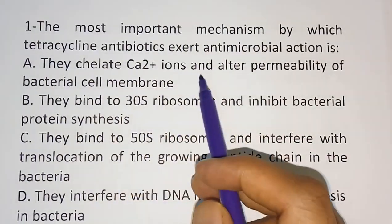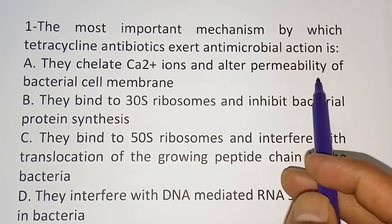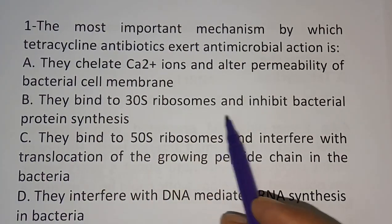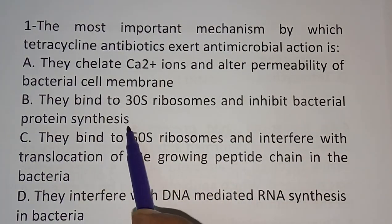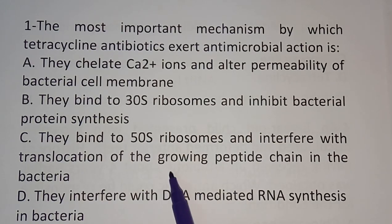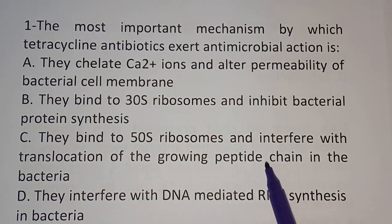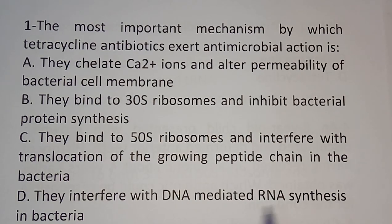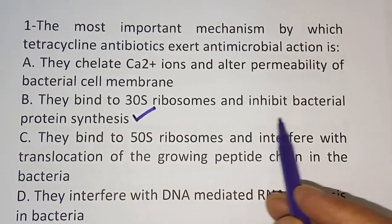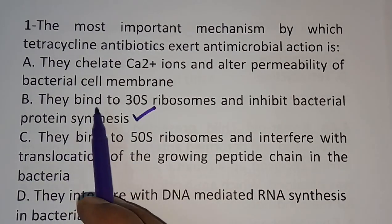Option A: they chelate calcium ions and alter permeability of the bacterial cell membrane. Option B: they bind to 30S ribosomes and inhibit bacterial protein synthesis. Option C: they bind to 50S ribosome and interfere with translocation of the growing peptide chain. Option D: they interfere with DNA-mediated RNA synthesis in bacteria. The correct answer is option B — bind to 30S ribosome and inhibit bacterial protein synthesis.